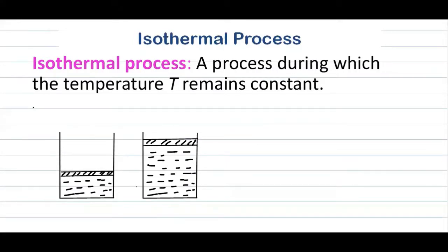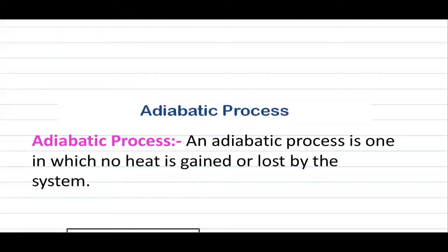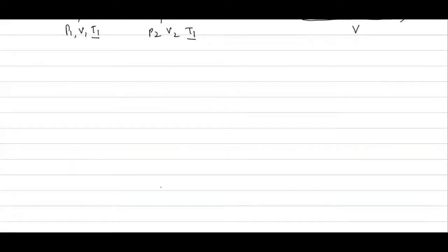Now let's understand the isothermal process. An isothermal process is one in which the temperature remains constant. If the initial state is described by P1, V1, T1, and the final state by P2, V2, T1, then delta T equals zero — no change in temperature. On a PV diagram this appears as a curve from the initial state to the final state. Examples include a change of state or phase change of liquids through melting and evaporation, which are considered constant temperature processes.